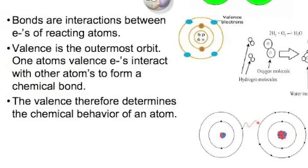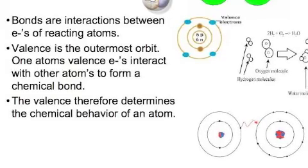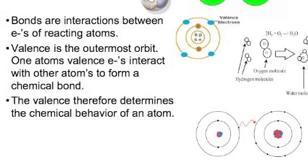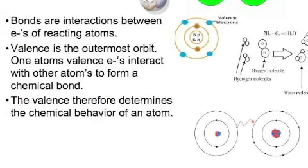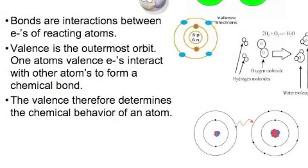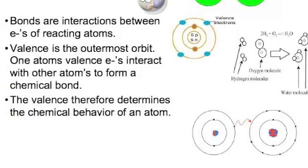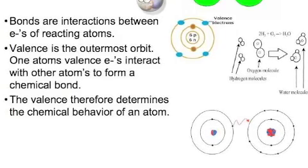The valence is the outermost shell or orbit. One atom's valence electron is the one that will interact with another atom's valence electrons and then they will form a chemical bond. So therefore it is the valence that determines the chemical behavior of an atom.